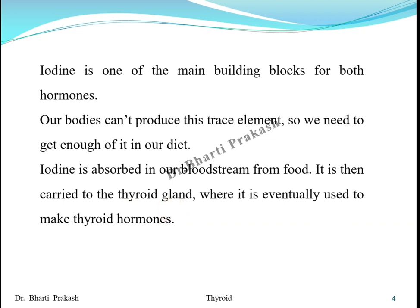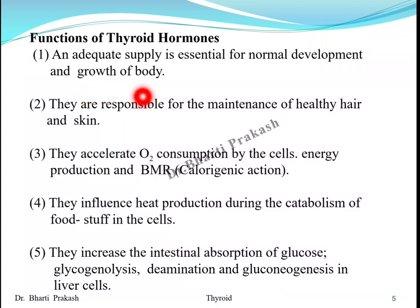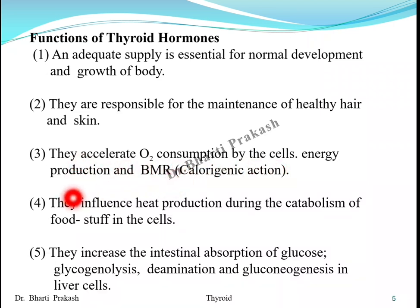Now, what are the functions of these thyroid hormones? An adequate supply is essential for the normal development and growth of the body. The thyroid hormones are also responsible for the maintenance of healthy hair and healthy skin. They accelerate oxygen consumption by the cells, energy production, and the basal metabolic rate — that is, they are calorigenic in action.